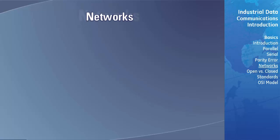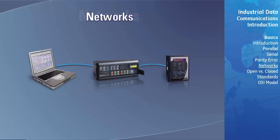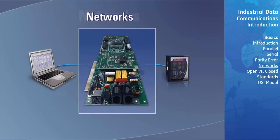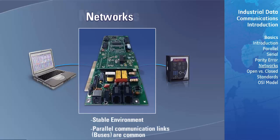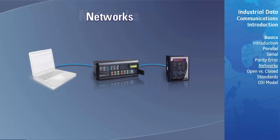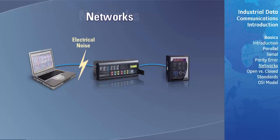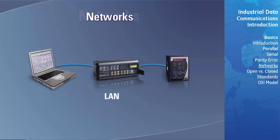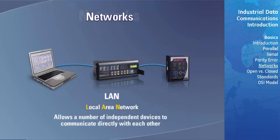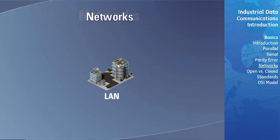The transfer of bits in a communication system using on-off voltages requires a tightly controlled electrical environment. The data communication environment across short distances between components of microprocessor-based devices such as a computer is usually stable, so parallel communication links known as buses are common. For data communication with external devices located some distance away, the environment often has a lot of electrical noise. The electrical properties of the cable and external electrical noise lend a strong advantage to serial communication over parallel, so serial communication links tend to be the norm. These serial links are referred to as a LAN, which is an abbreviation for Local Area Network. Typically, a LAN includes all the components of a data communication system that allows a number of independent devices to communicate directly with each other, generally over a small geographic area such as a building.